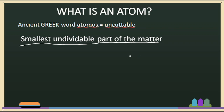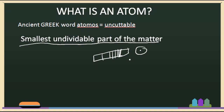You will find matter all around you: air, gas, pen, pencil, notebook, paper, etc. If you take any of these and break it — break, break, break — down to the smallest possible particles, those smallest parts are what we call atoms. That is the basic definition of an atom.